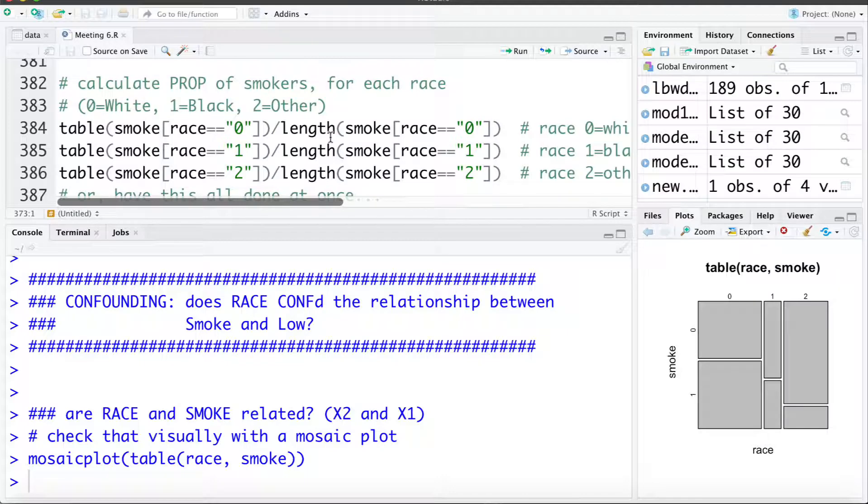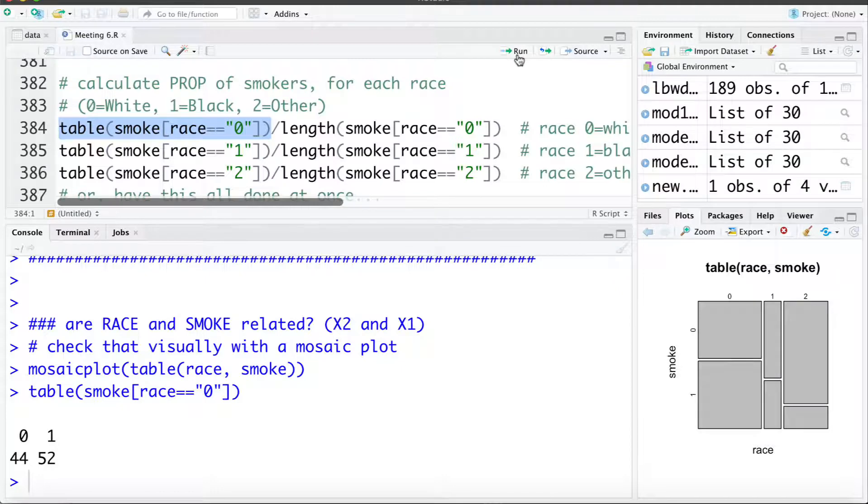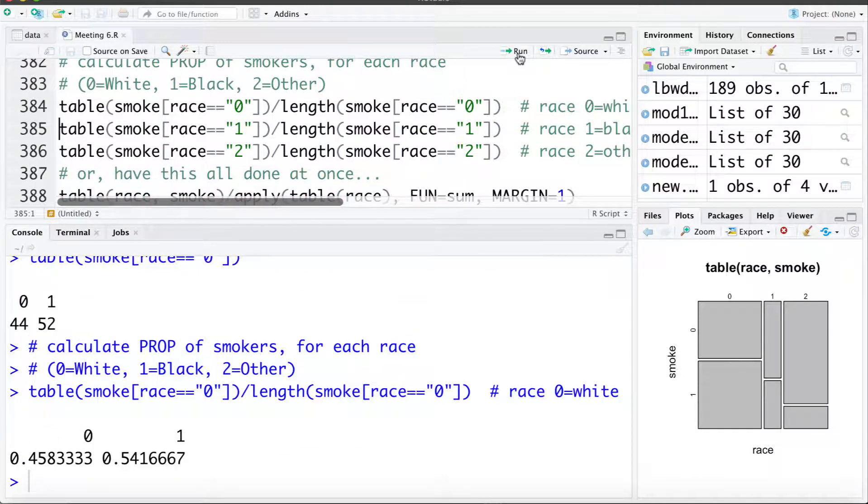We can also go ahead and calculate the proportion of smokers for each of the race categories. So we said visually it looks like for white it's about 50% smokers. In order to get the proportions there's a few ways you can do that. What I'm going to do is firstly I'm going to create a table of smoking only for race 0. So that's going to return to me the number of smokers 52 and non-smokers 44 in the white race category. And then I'm going to take that table and divide it by the length of smoking for race 0, dividing it by 96. So doing all that here we can see in the white race category 54.1% are smokers.